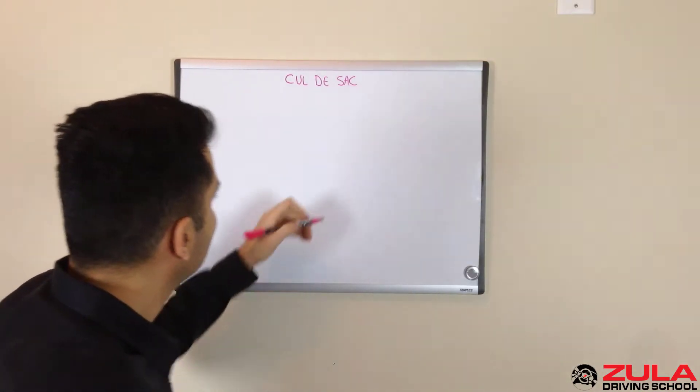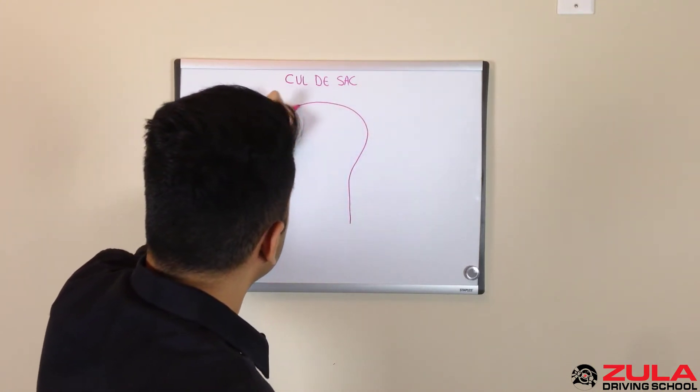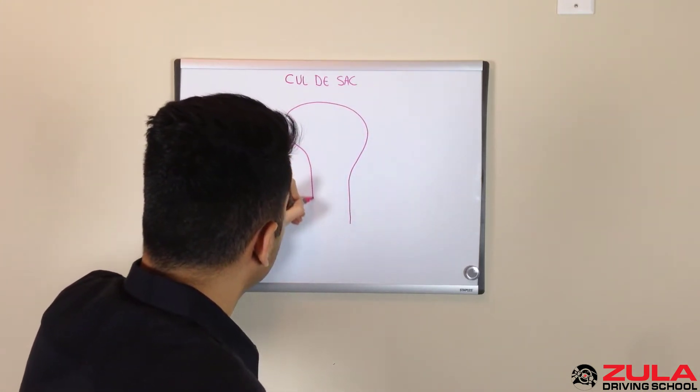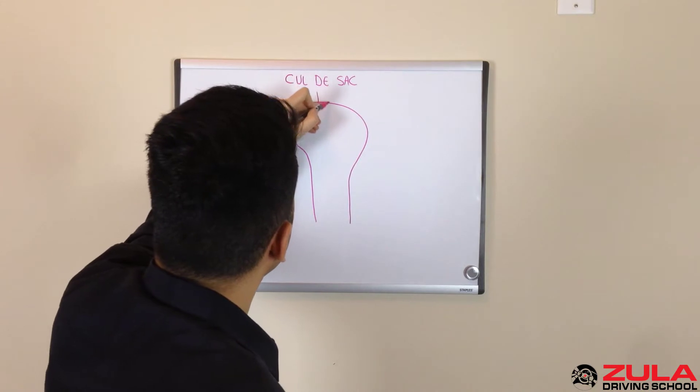Alright, cul-de-sacs. You find cul-de-sacs usually at the end of residential areas where there's usually driveways off of them.